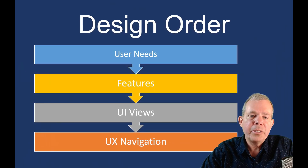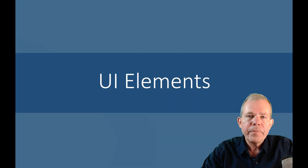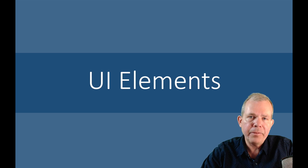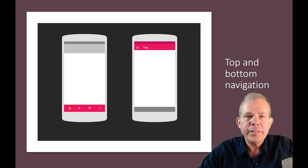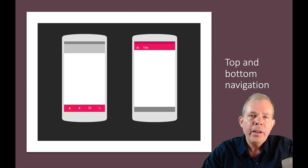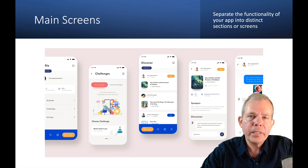Here's the design order: first you pick out what your user needs are, figure out which features are going to meet those needs, then create the views — every feature needs a screen to go with it. For UI best practices: your mobile app should have consistency with a typical bottom and top toolbar. Separate the functionality so each feature has its own screen. Don't create a monster screen with 50 checkboxes. Separate tasks and put each one into its own view.